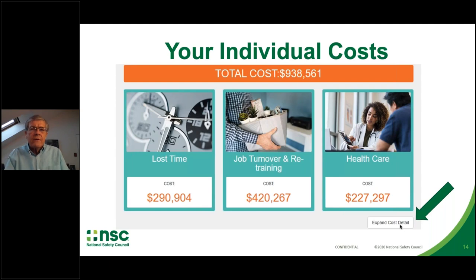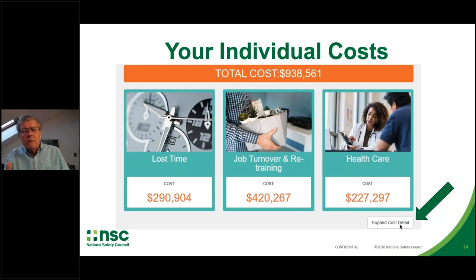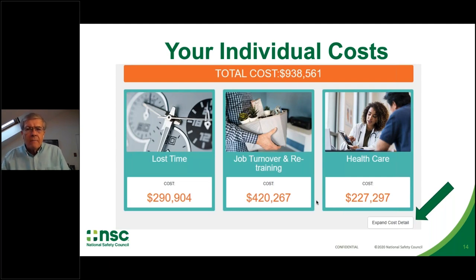You can find more detail by clicking the button that says 'Expand Cost Detail.' Under lost time is the greater number of days taken off with unscheduled leave or illness, injury, or other reasons — not vacation — that people with untreated substance use have compared to their peers in the same industry and state who do not have a substance use disorder. All costs are estimated based on Department of Labor information updated to July 2020. Job turnover is figured based on the greater number of employees with a substance use problem who will have had more than one employer in the prior year. The cost of turnover averages about 21% of annual salary cost.